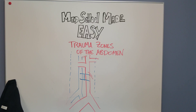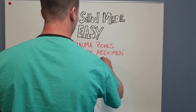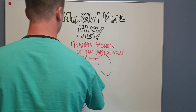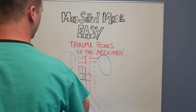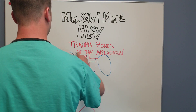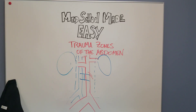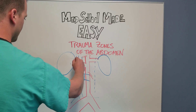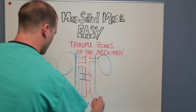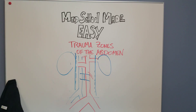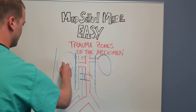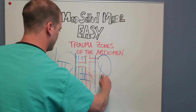Zone two is going to be lateral to this — the lateral retroperitoneum. As you can imagine, over here will be your kidneys. Zone two is going to be on either side, basically from the hilum of the kidneys out laterally into the pericolic gutters.